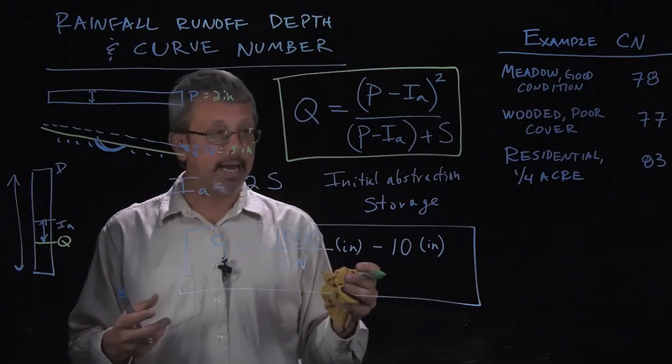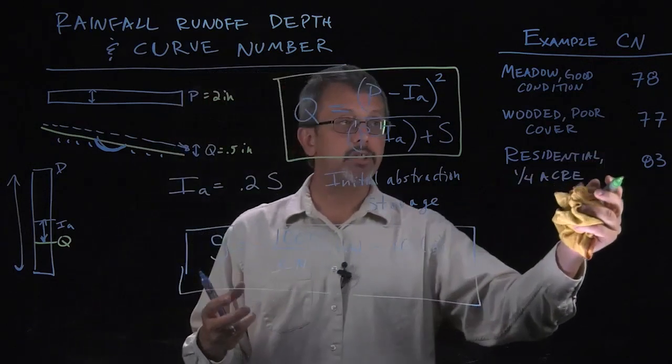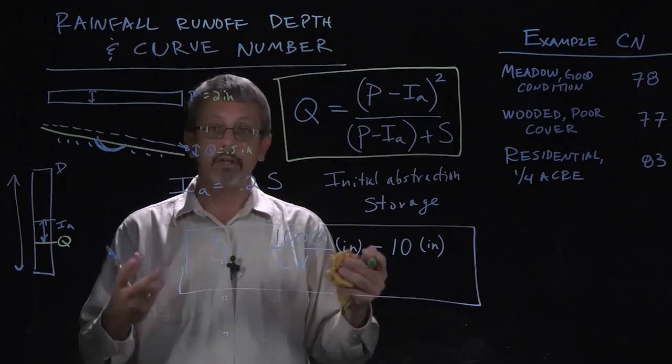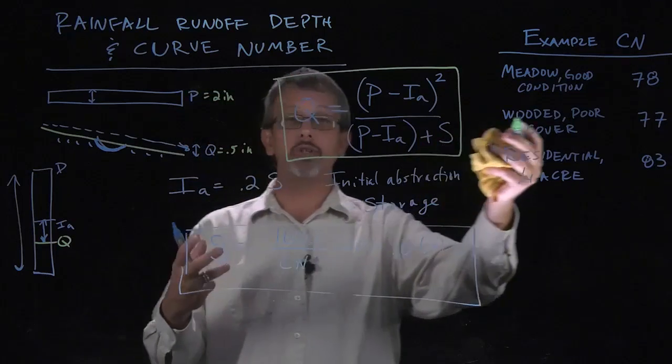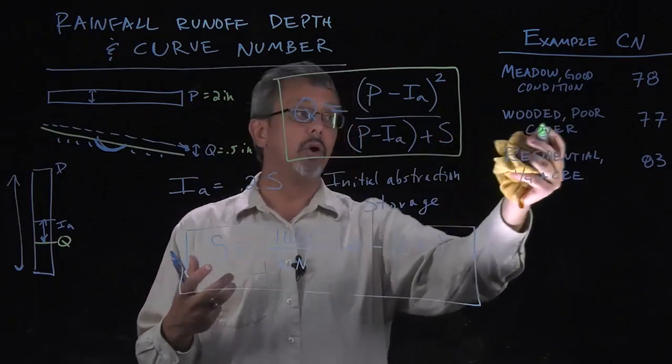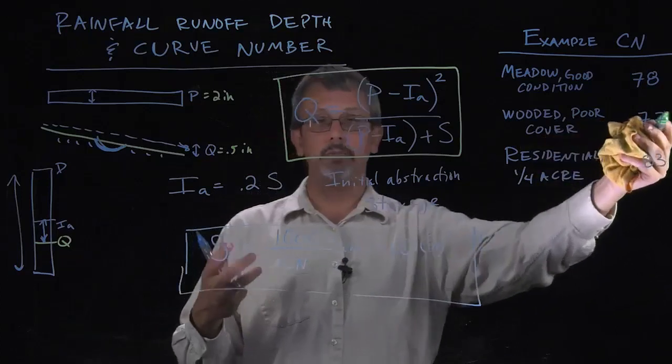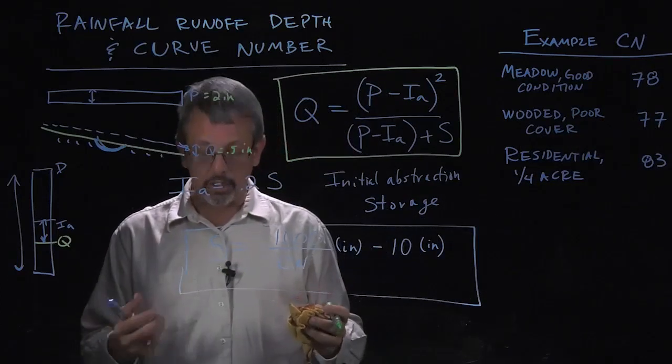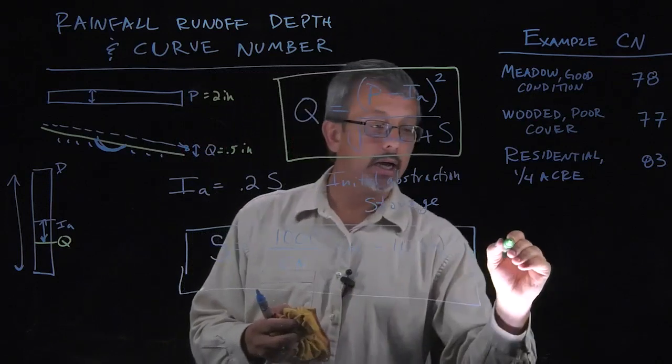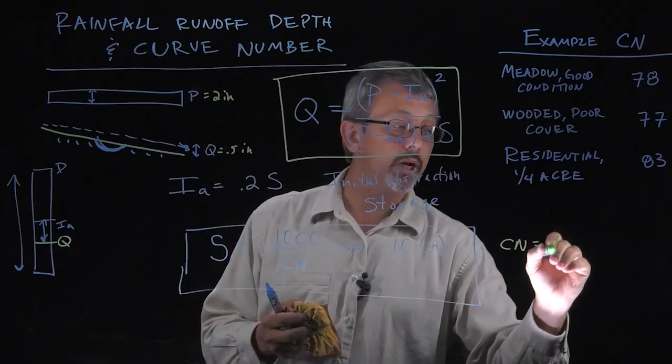So what we do in a case like that is we might say, let's say for example, we live in a location or we're interested in the runoff of an area that's maybe some wooded. But the example I use here, we'll say we have a curve number of 75.